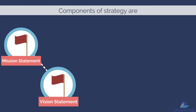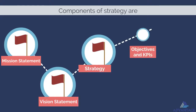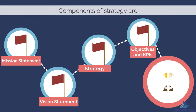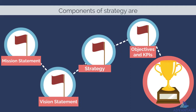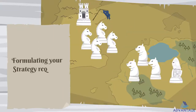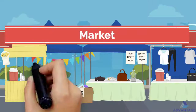The vision statement answers: what do we want to achieve? Strategy defines how to achieve the vision, and objectives and KPIs determine how we're going to measure progress and success toward achieving our goals.